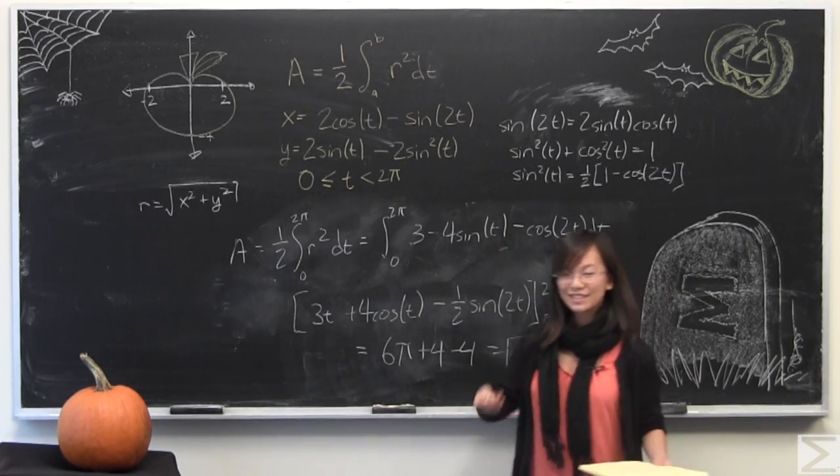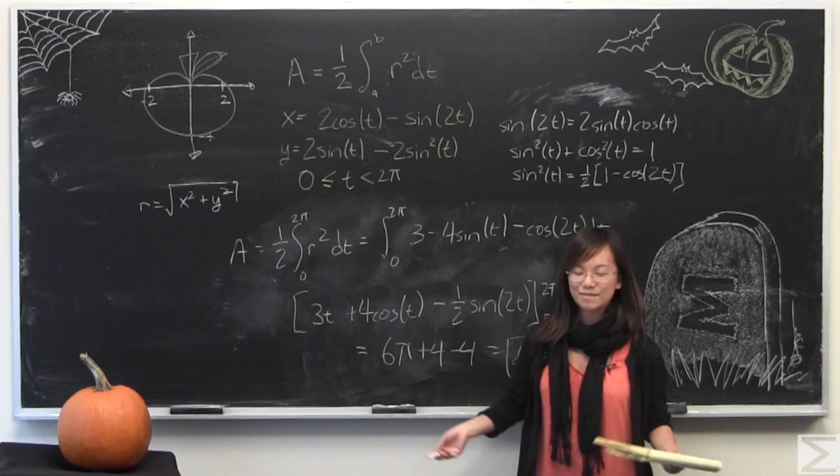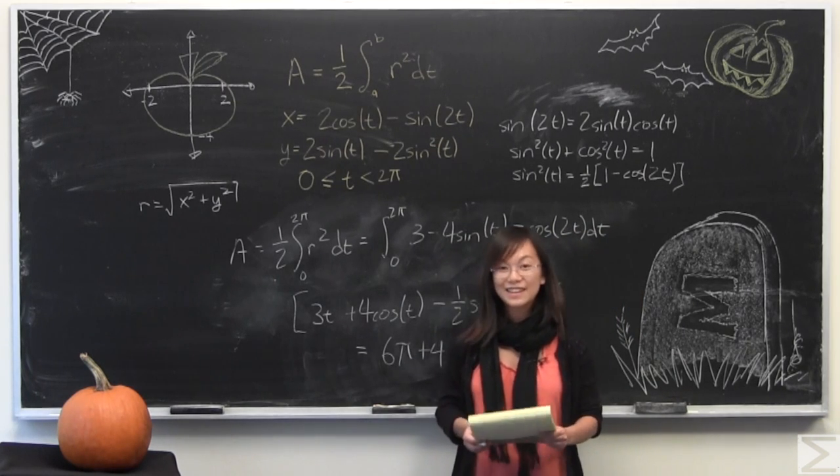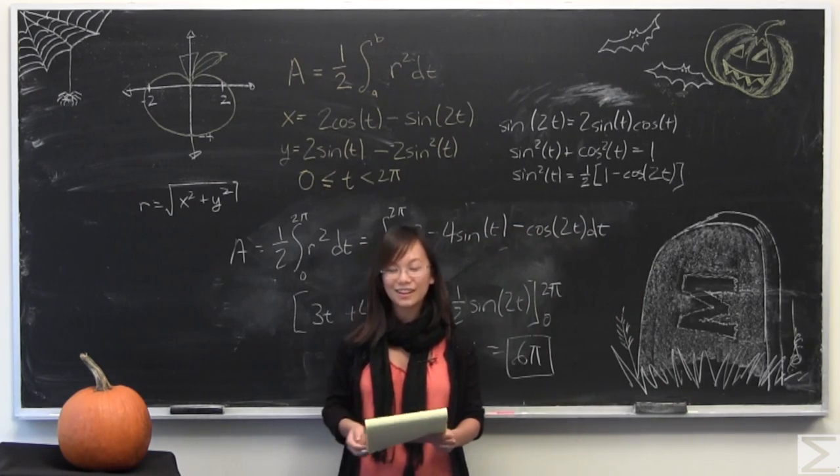And that gives you the area of this cardioid cross section of a pumpkin whatever you want to call it. And that is it for this week's problem of the week Halloween themed.